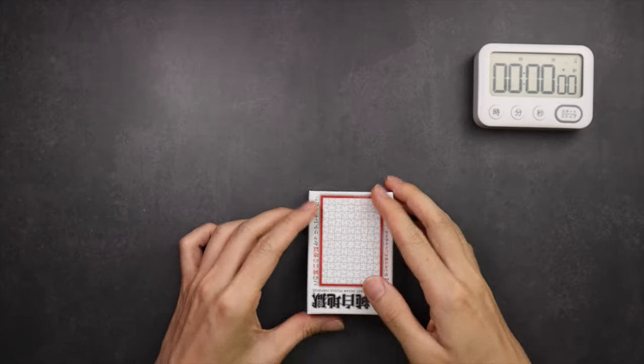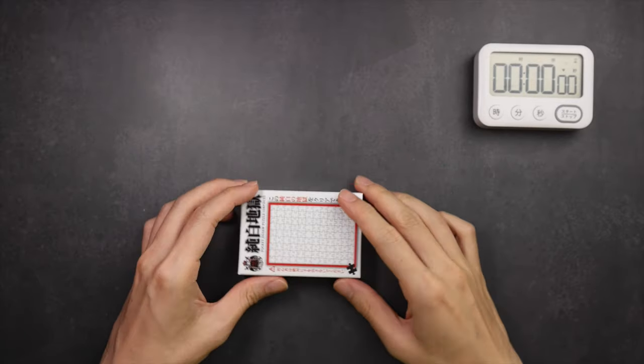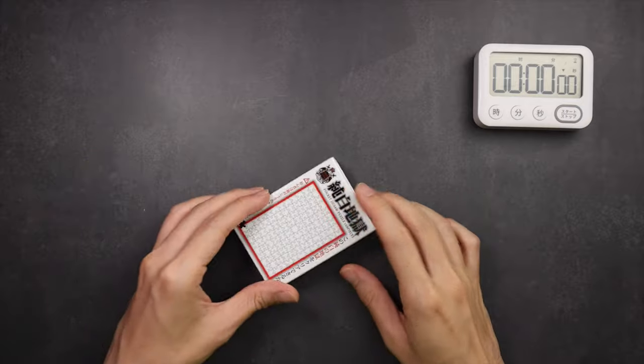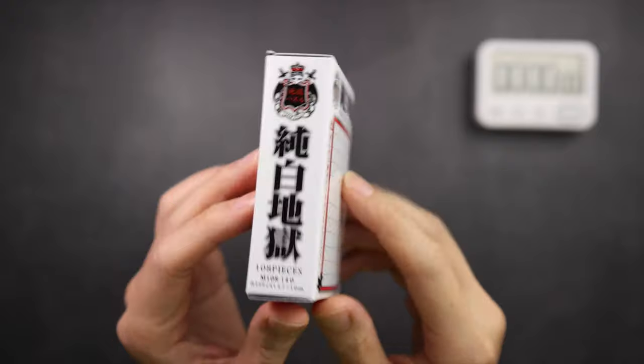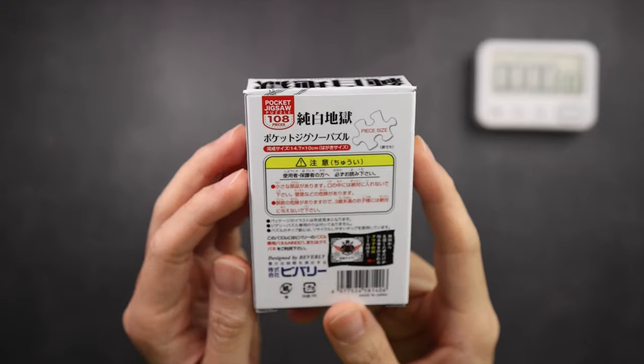Hello and welcome! Today's video is going to be slightly different as it is my first video on solving a jigsaw puzzle. But it's not your everyday jigsaw puzzle as you can see there are no pictures or patterns printed on it. This is called the White Hell Jigsaw Puzzle by Beverly of Japan.